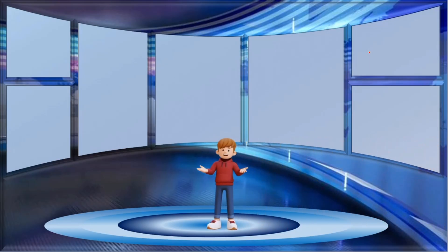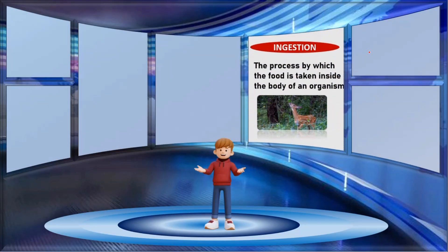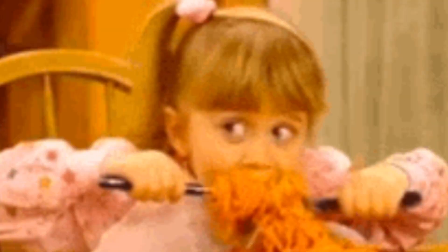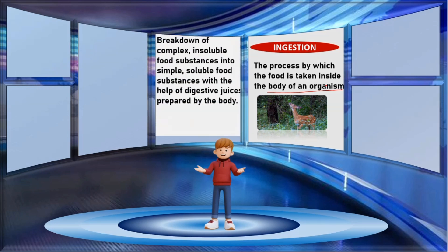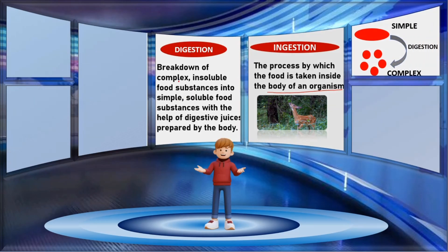First, ingestion. The process by which the food is taken inside the body of an organism is called ingestion. When we put food into our mouth with hands, we are ingesting the food. However, different animals ingest food in different ways and have special organs for this purpose. When we talk about digestion, the food of most animals consists of complex insoluble substances which cannot be absorbed by the body in this form. The process of breakdown of complex insoluble substances into simple soluble food substances with the help of digestive juices is called digestion.